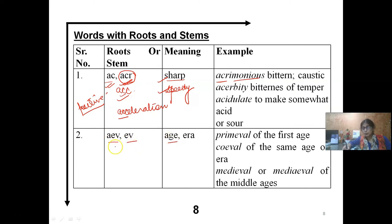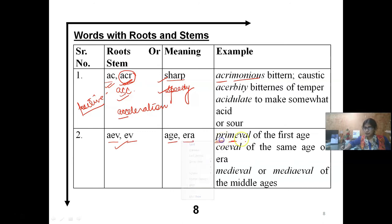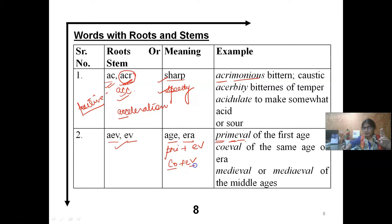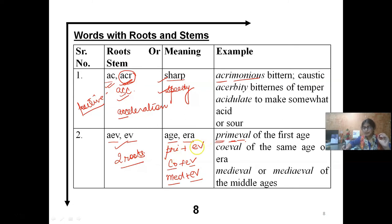Next root: AEV or EVE — these two roots represent 'age' or 'era.' PRIMEVAL — PRIME means first, EVE means age — so primeval means primary, the first age. COEVAL — CO means same, EVE means age — same age. MEDIEVAL — MED means middle, EVE means age — middle age. So one word can be made from two roots combined.